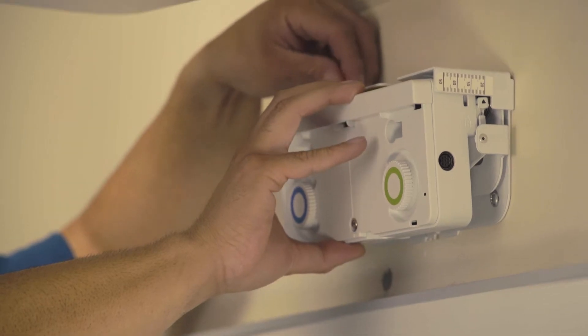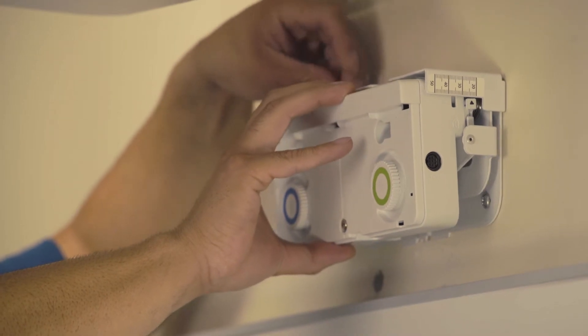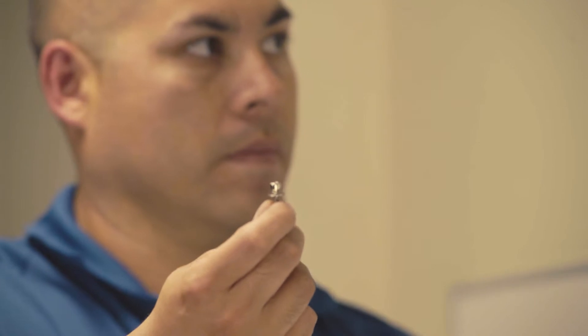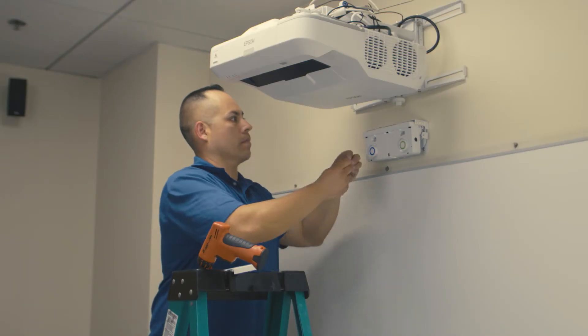Using the ruler on the side of the bracket, set the touch unit depth to match the thickness of the board. Secure at the top using the two screws included in the hardware bag.